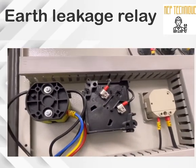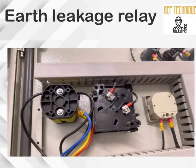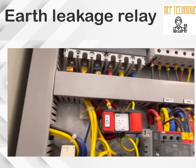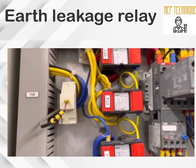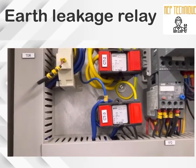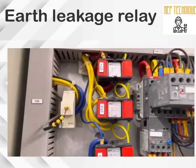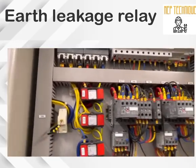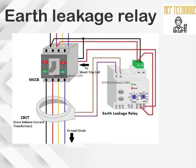We will discuss the ammeter in more detail in our next topic. I hope you understood the earth leakage relay and the core balance current transformer inside the electrical panel. The ELR is connected with the shunt trip coil of the MCCB. In case an earth leakage occurs, the earth leakage relay will trip our MCCB through the shunt trip coil.